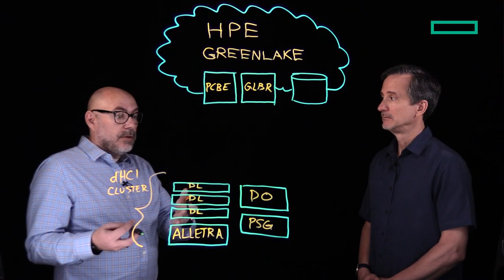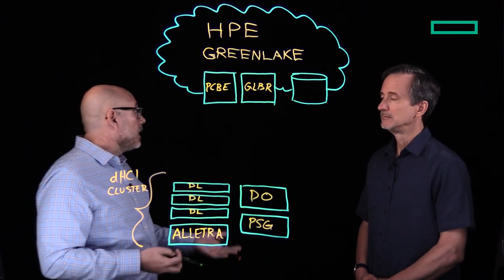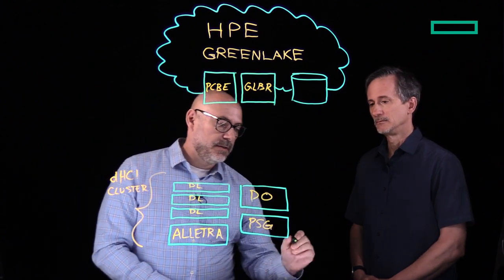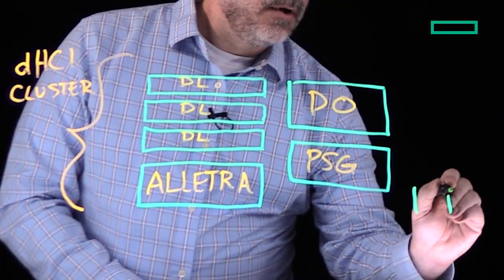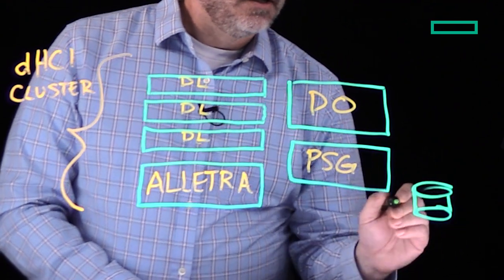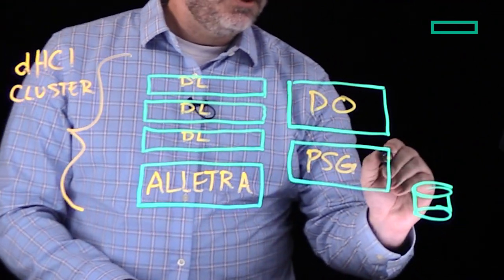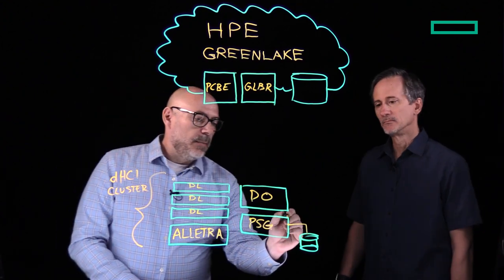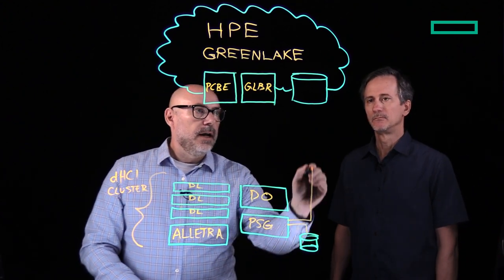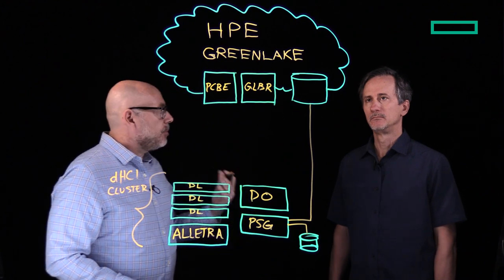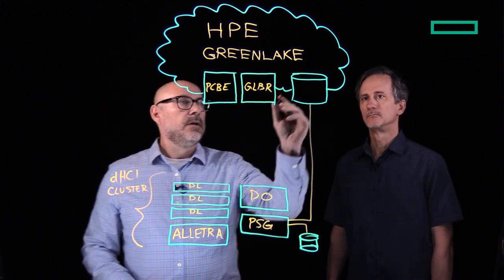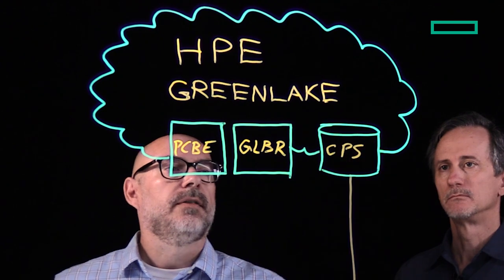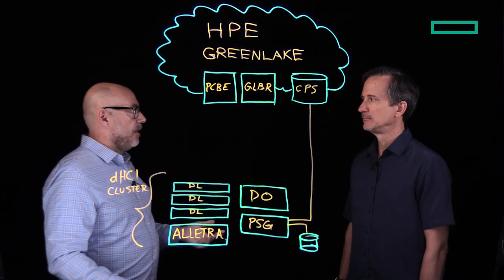The PSG manages all of the storage we use for backup targets. It might have, for instance, an on-prem repository that we configure — the PSG would be the gateway into that, and that's where we store local backups. It might also be our gateway into a cloud-based backup repository, which we call the Cloud Protection Store — that allows for secure off-site backups.